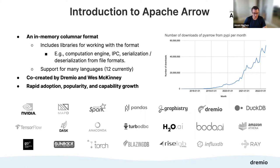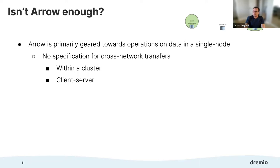So isn't Arrow enough? The key issue is that Arrow is primarily geared towards operations on data in a single node. You can use the IPC format within a single node, but there's no specification for cross-network transfers — neither within a cluster for things like a shuffle, nor for client-server transfers. That's the problem Arrow Flight sets out to solve: the network transfer of Arrow data.